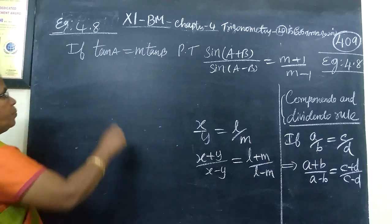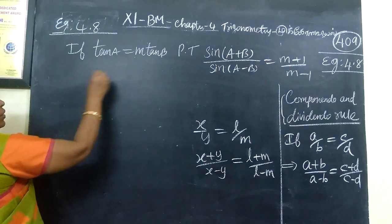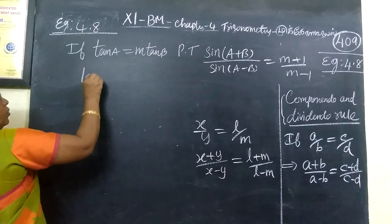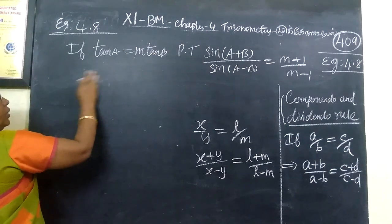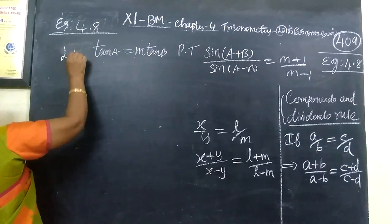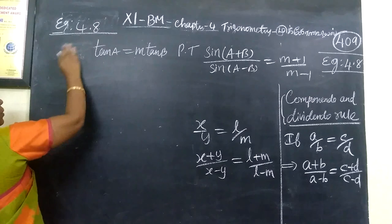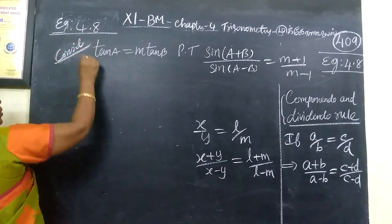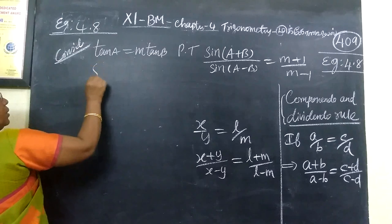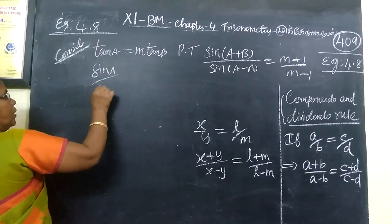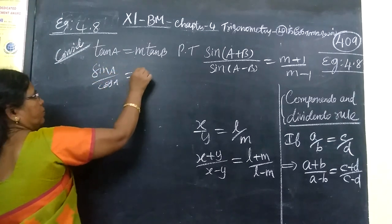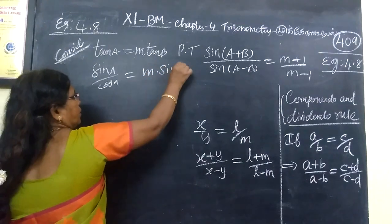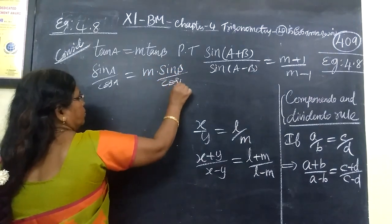Using this property, here also we are doing this. Now, consider tan a. Tan a you can write as sin a by cos a, equal to m into sin b by cos b.